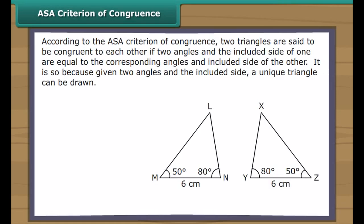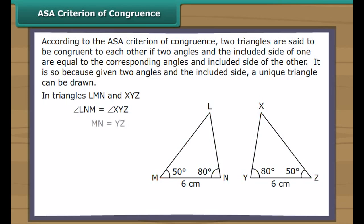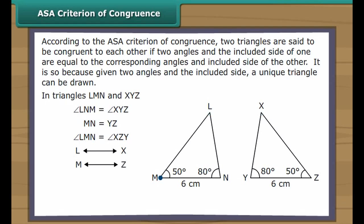ASA criterion of congruence: according to the ASA criterion, two triangles are said to be congruent to each other if two angles and the included side of one are equal to the corresponding two angles and included side of the other. This is because given two angles and the included side, a unique triangle can be drawn. In triangles LMN and XYZ: angle LMN equals angle XYZ, side MN equals side YZ, and the other corresponding angle matches. Vertex L corresponds to X, vertex M to Z, vertex N to Y. Therefore, triangle LMN is congruent to triangle XYZ.